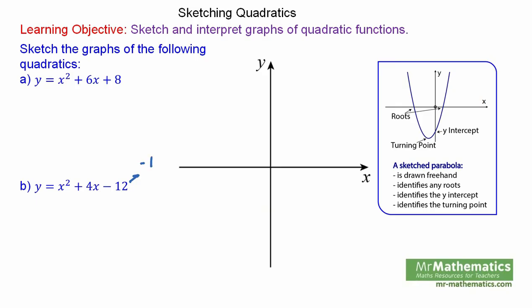Now we will try the next question. We are going to factorise the negative 12. We could try negative 1 and 12, negative 2 and 6, which has a sum of 4. So that does work. So y equals x minus 2 times x plus 6.